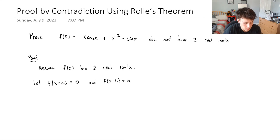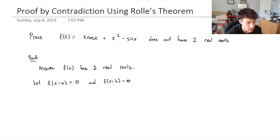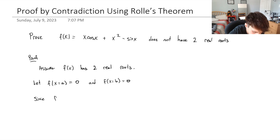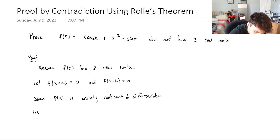We can see that from our function we have a polynomial and some trig functions in there. So there are no discontinuities, and it's continuous over its entire interval. So we should be able to apply Rolle's Theorem to these two points a and b, since f(x) is entirely continuous and differentiable, we can use Rolle's Theorem.